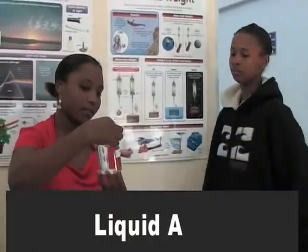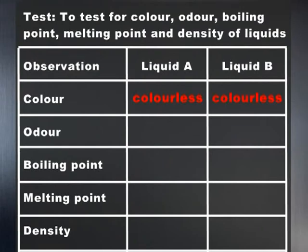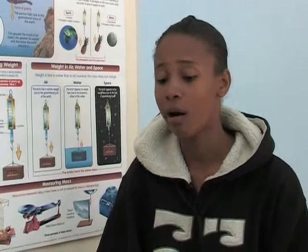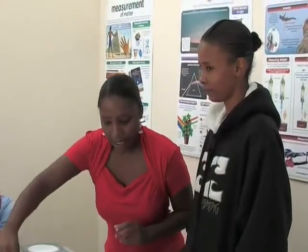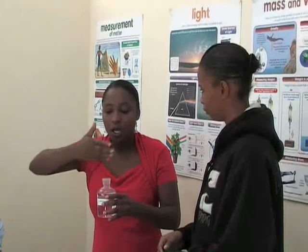What is the colour of liquid A? Liquid A is colourless. And liquid B? Liquid B is also colourless. Well, there is no conclusion so far — all of them are colourless — so let's do the odour test. Let's start with liquid A. Let me open the bottle. Remember, when you do an odour test, you never smell a chemical directly. Some chemicals have a very sharp smell. You open the bottle and you wave with your hand and smell the aroma.